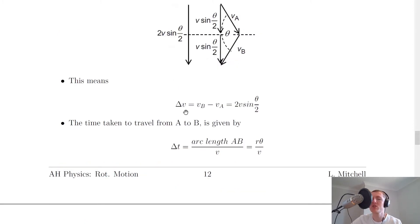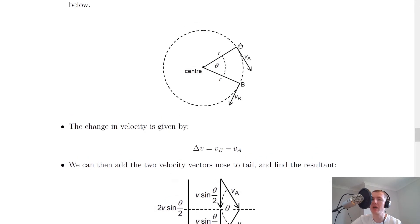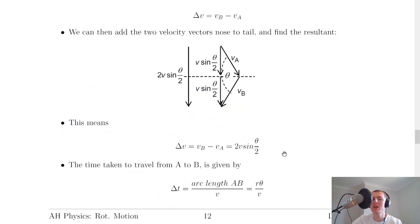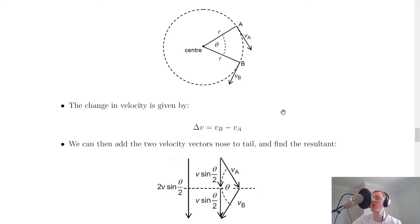So the resultant vector — the change in velocity — is equal to VB minus VA, which equals 2V sine theta over two. Now for the time taken to travel from A to B along the arc, we have delta T equals arc length AB over the speed V — essentially time equals distance over speed. The arc length is R theta, so delta T equals R theta over V, using the arc length formula S equals R theta.